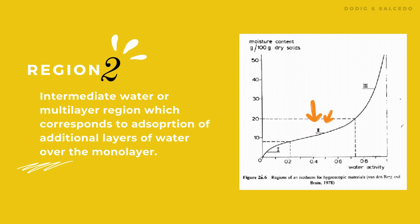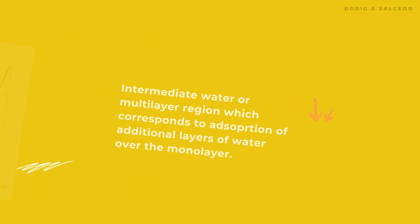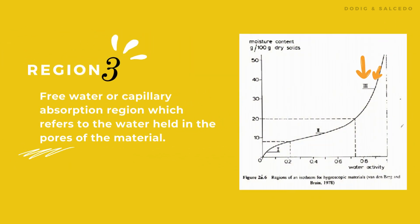Water molecules are also held tightly by the food, making them have limited mobility. For Region 2, the intermediate water or multilayer region, this corresponds to adsorption of additional layers of water over the monolayer. In this region, moisture content is still relatively low but water activity increases more, and water molecules interact with food with some mobility. For Region 3, the free water or capillary absorption region, this refers to the water held in the pores of the material. In this region, both moisture content and water activity are high, and water molecules are more free with high mobility.